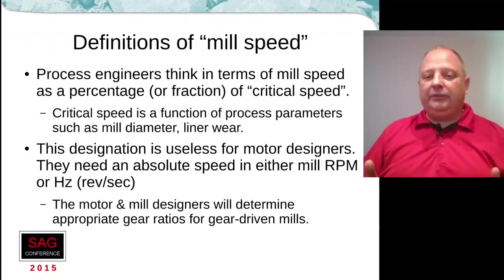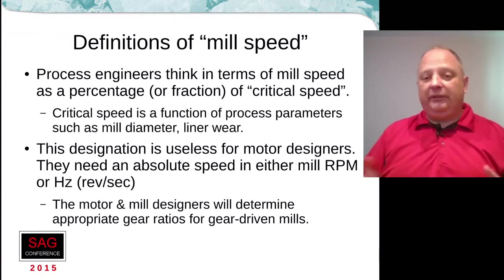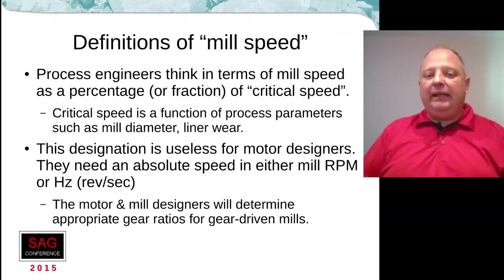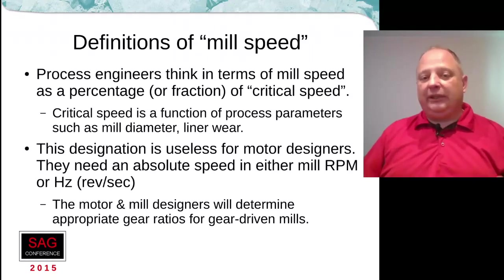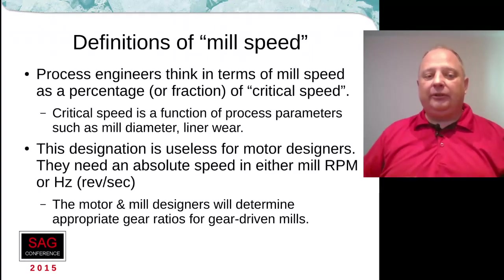Critical speed is useless to motor designers. They need an absolute speed for the mill or the motor — letting them deal with the gear ratios — and they need that in RPM, or you can give them Hz (cycles per second). Normally we work in RPM because those units work really well with large grinding mills.